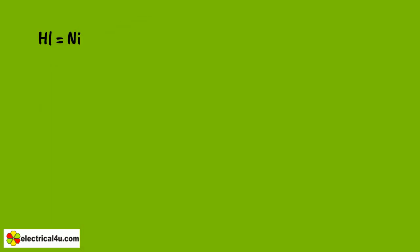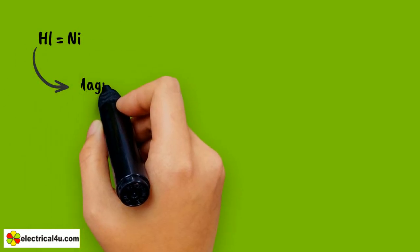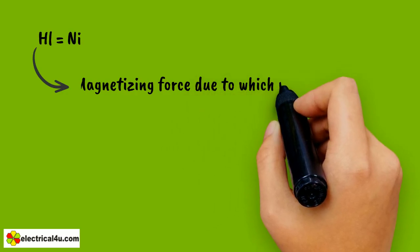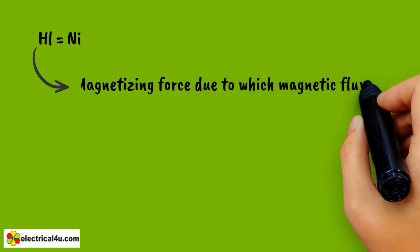Again, H L is equal to N i, where H is the magnetizing force due to which magnetic flux lines flow from south to north pole inside the coil.